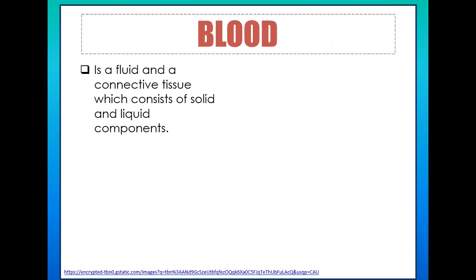Blood is metallic in taste — when you taste traces of blood from a wound, it gives a metallic flavor, the reason for which will be explained later. The color of blood inside the body is opaque; it only becomes red when exposed to the external environment, because air contains oxygen, and the reaction to oxygen makes it red. Blood is also five times thicker than water, making it viscous.